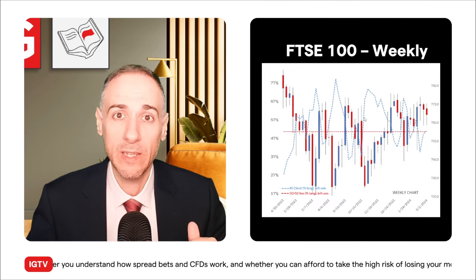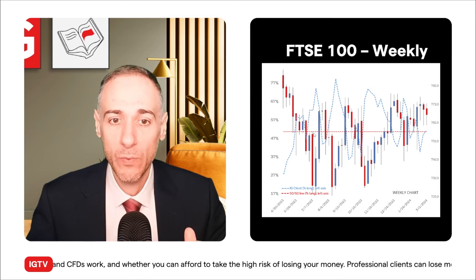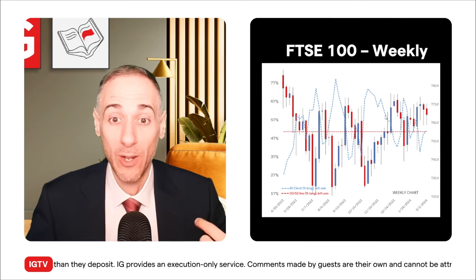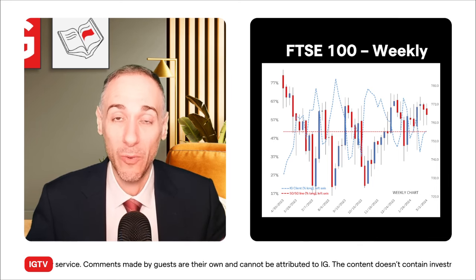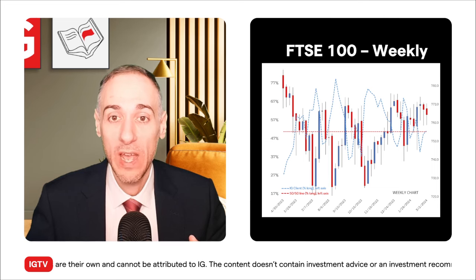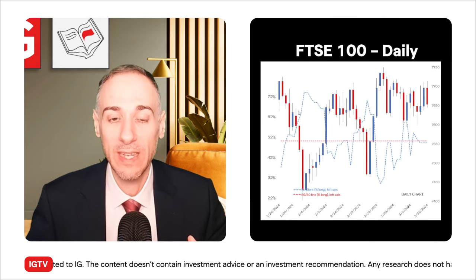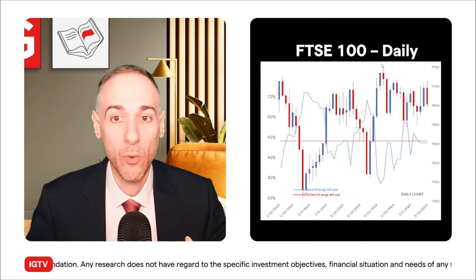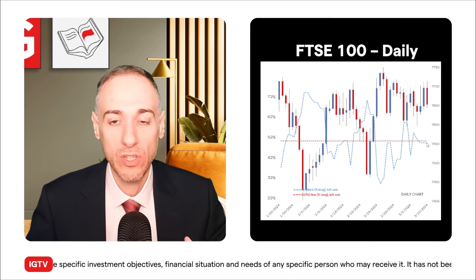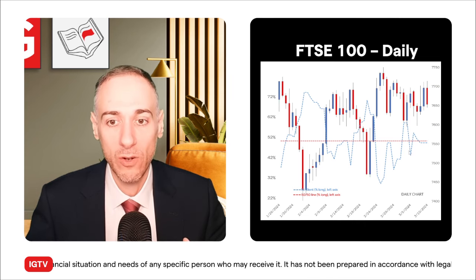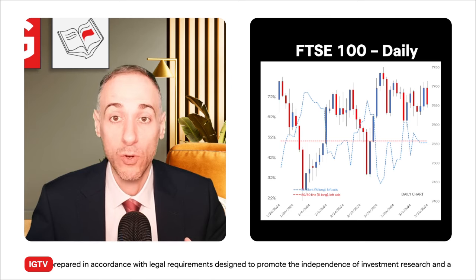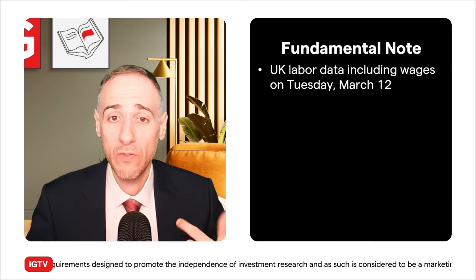Plotting IG client sentiment onto the chart: the blue dotted line represents IG client sentiment as percent long on the left axis, and the red dotted line marks the 50/50 line. When the dotted line goes above, it's majority buy; below is majority short. The FTSE has spent the majority of time in majority buy territory — clients anticipating price gains. Zooming into the daily timeframe: every time price dips, sentiment goes to majority buy, range trading within this zone getting a little aggressive. Last week started at majority sell, then on the pullback flipped to majority buy, then gains followed before returning to majority sell territory.